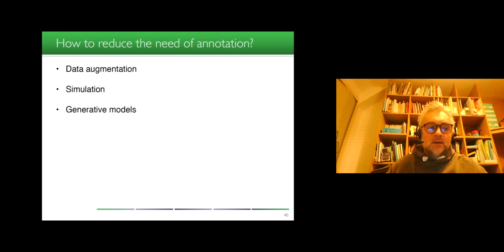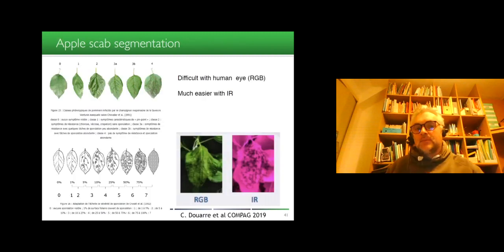So now we've seen how to speed up annotation, how to reduce the need of annotation. Actually, the tricks in computer vision and in machine learning are well known. Data augmentation, simulation and generative models are three ways of reducing the need of annotation. And it's often difficult to know which one would be the best. So in one of our recent studies, we decided to compare the three of these families on the same use case. This use case is apple scab segmentation, which is a disease which appears on the leaf of the apples, and which is more visible in the infrared domain as we published in 2019 with Clément Dwarf.